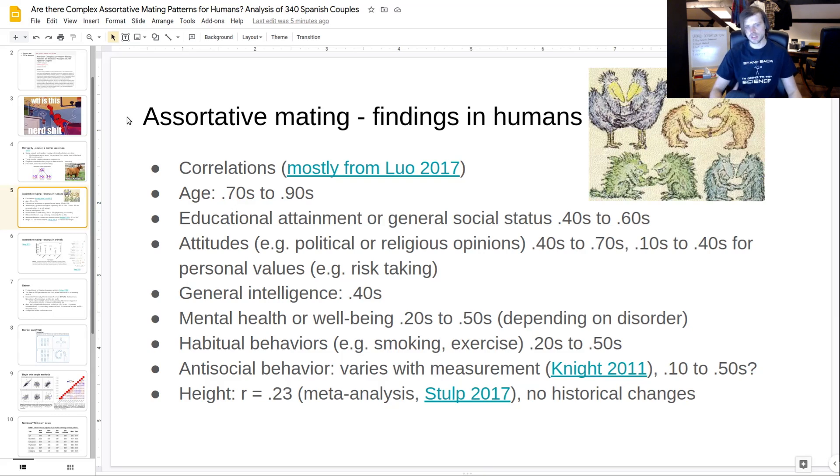If you do specific values like risk taking, they are less correlated. It's mostly, I think, a measurement error problem. Like these specific measures are more prone to just bad measurement. General intelligence, 0.4-ish. There is a meta-analysis of this somewhere. I did a simple one with just a few studies some years ago, never finished that. I found a mean correlation of 0.45 or so.